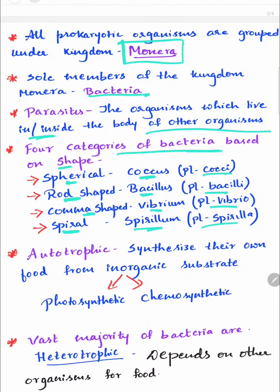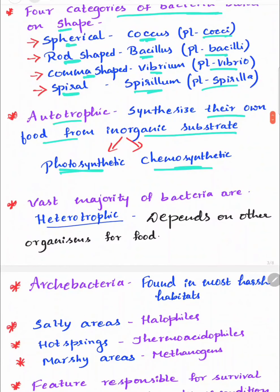Autotrophic mode of nutrition means they synthesize their own food from inorganic substrates — it may be photosynthetic or chemosynthetic. The vast majority of bacteria are heterotrophic, meaning they depend on other organisms for food.